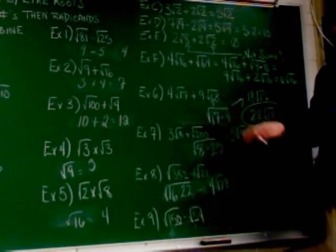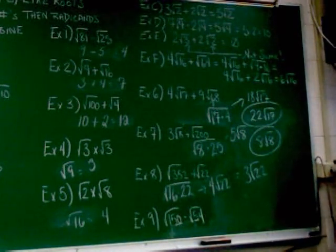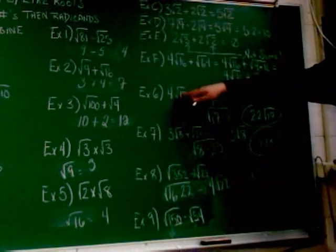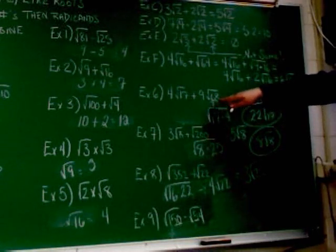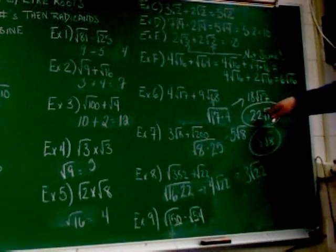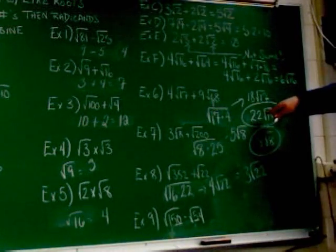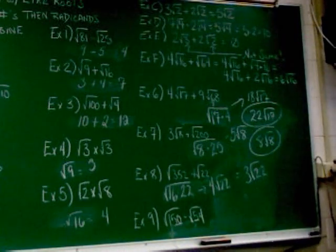And then what happened? I added it. This was 4 root 17 plus 8 plus 18 root 17 which is 22 root 17. Get it?